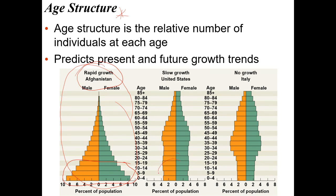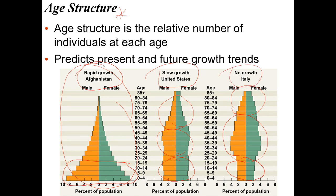Compare that to a population with a fair number of young people but roughly the same as the middle-aged people — that population is growing, but not very quickly. Then there's a population with a smaller group of young people than those in the middle years, roughly equal to the older group — this shows no growth or sometimes even decreased growth.